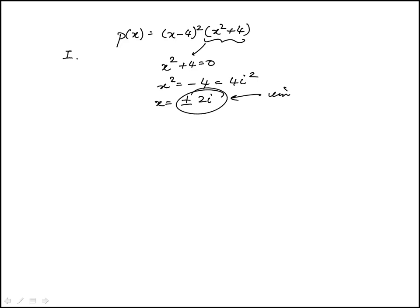These are imaginary roots because there is no real part; the real part is zero. Yes, we do have two of them, so statement one holds true.